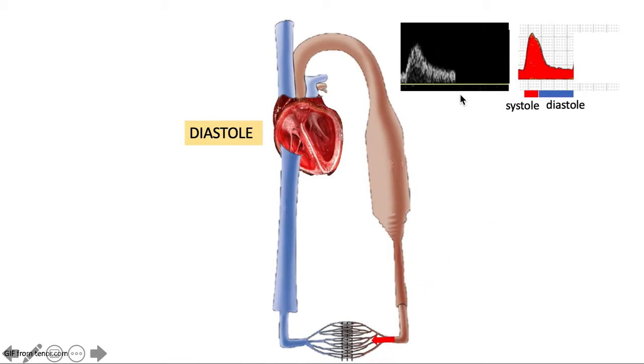This shows us an example of a low resistance waveform. Note that during diastole, depicted here in blue, there is still flow from the arterioles to the capillary bed.